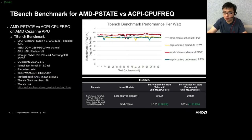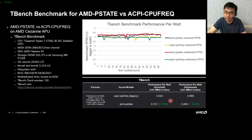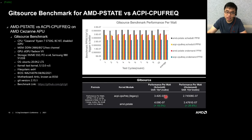We picked the AMD Zen processor to do some performance-per-watt testing on multiple CPU benchmarks. For TBench with 128 clients, the average data shows AMD P-state got 3% improvement with schedutil and 10% improvement with on-demand. For the GitSource benchmark test, the average data shows AMD P-state got 19% improvement with schedutil and 26% improvement with on-demand.